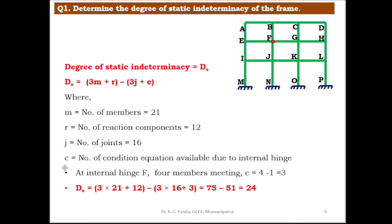Now substituting: ds = 3m + r − 3j + c = 3(21) + 12 − 3(16) + 3 = 63 + 12 − 48 + 3 = 75 − 51 = 24. This is the degree of static indeterminacy of the rigid jointed plane frame with internal hinge at F.